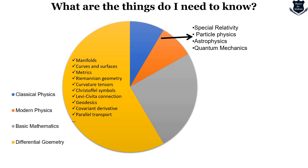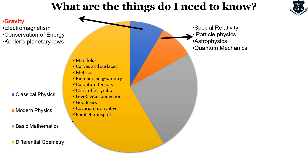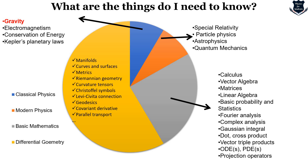In modern physics, you might know a little of Special Relativity and particle physics. If you do not know astrophysics, that does not matter. Even if you do not know quantum physics, that does not matter. But in classical physics, you need to have a super understanding of gravity, electromagnetism, conservation of energy, and Kepler's planetary laws. In basic mathematics, you need calculus, vector algebra, matrices, linear algebra, basic probability and statistics, Fourier analysis, complex numbers, Gaussian integrals, dot products, and most importantly calculus. This again shows that you need more and more about geometry, a little bit of modern physics, a good understanding of classical physics, and a good understanding of basic mathematics.